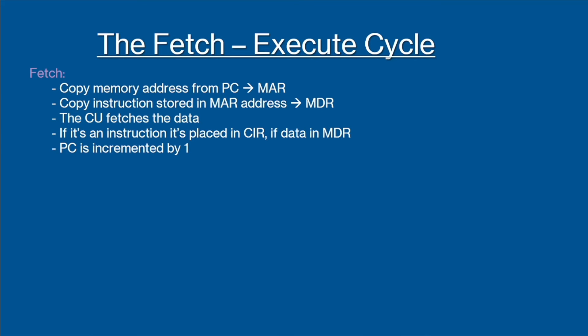Now that you know the main parts that make up the CPU, we will look at how they all work together to fetch, decode, and execute program instructions. This is known as the fetch-decode-execute cycle, or the fetch-execute cycle. Within the fetch part of the cycle, the memory address from where the data and instruction is held is copied from the PC to the MAR. The CU then fetches the data or instructions from the location stored in the MAR — if it is data, it is placed in the MDR, and if it is an instruction, in the CIR. The PC is then incremented by one to point to the address of the next instruction for the next cycle.